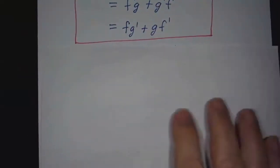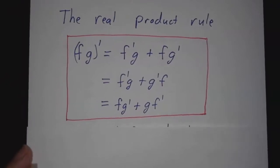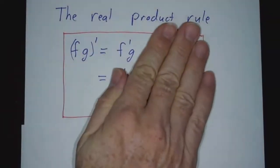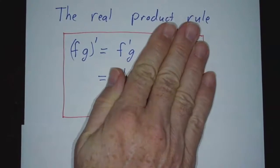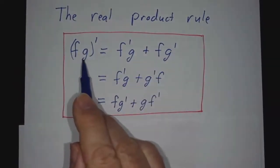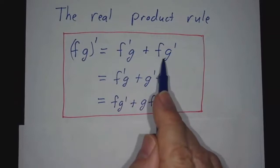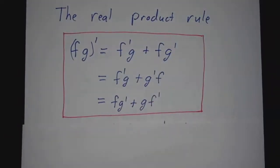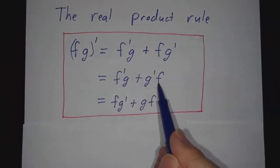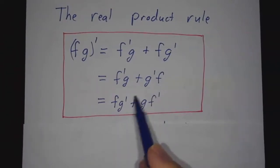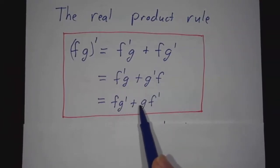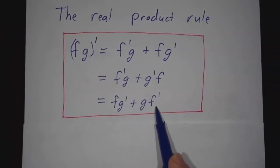So now we have the product rule. The derivative of f times g is f prime times g plus f times g prime. That's what you'd have if g were constant and f were changing — f prime times g — plus what you'd have if f were constant and g were changing — f times g prime. The total change is the effect of changing f plus the effect of changing g. You can write f times g prime or g prime times f — the order doesn't matter. It's one function times the derivative of the other, plus the other times the derivative of the first.